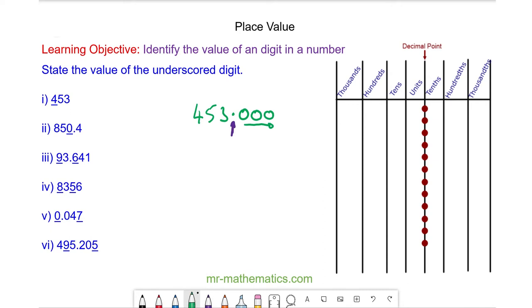So now we can put it into our place value table where the decimal point is here and we have three units, five tens, and four hundreds. We're asked to work out the value of the four and you can see the four is in the hundreds column, so this is four hundreds.